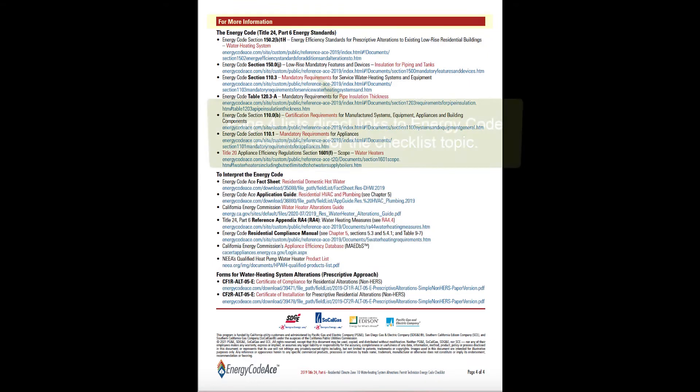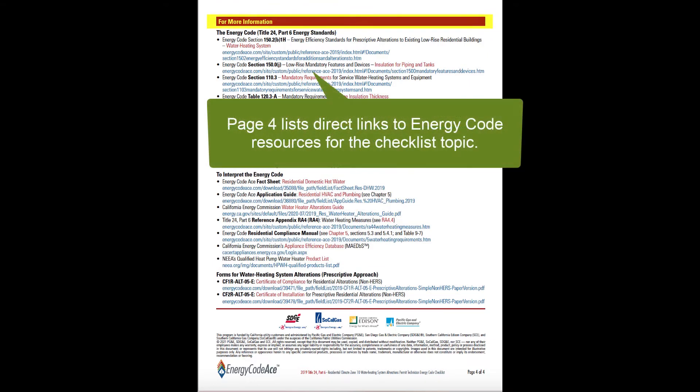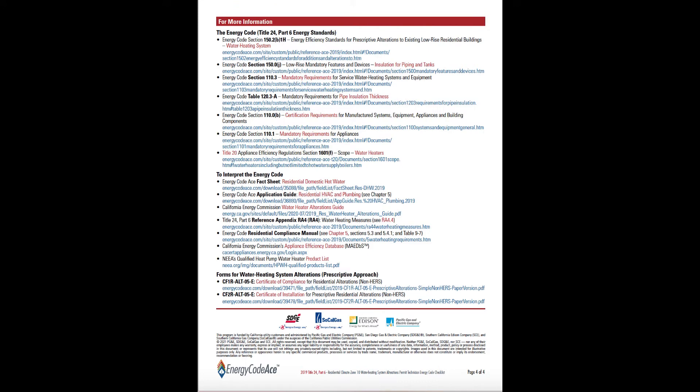Page 4, the final page of the checklist, provides a list of direct links to a variety of energy code resources on the checklist topic. Websites listed are generally from the California Energy Commission or Energy Code ACE. Giving the applicant a printout of their own will also provide them with this list of websites for more information.